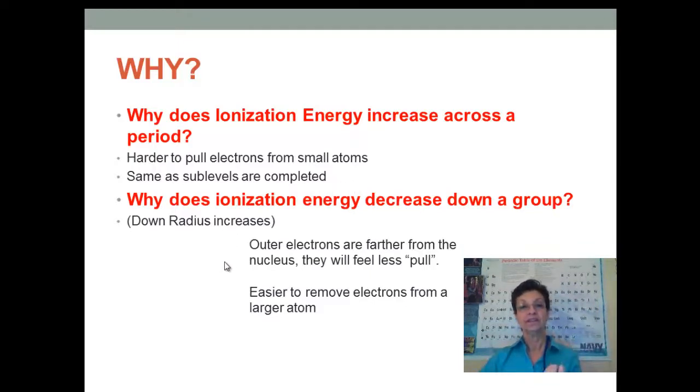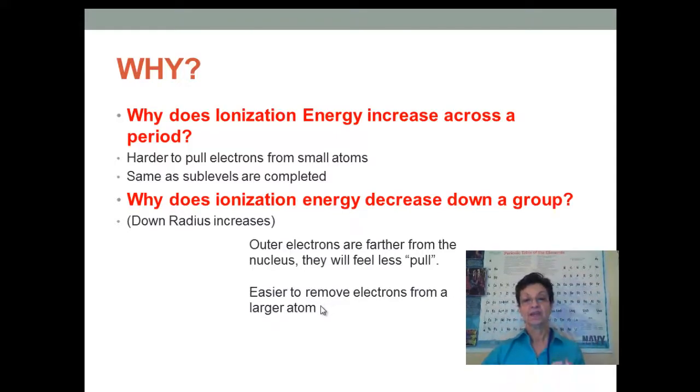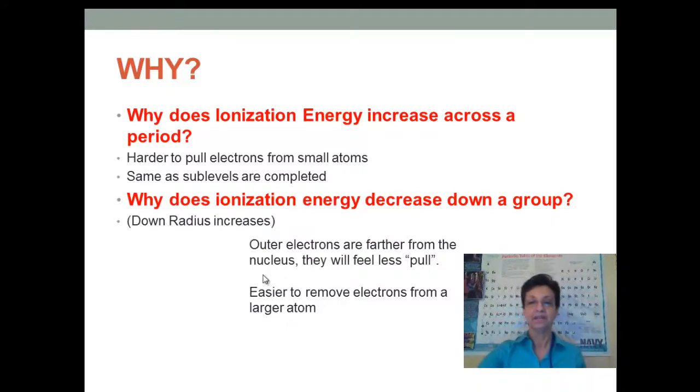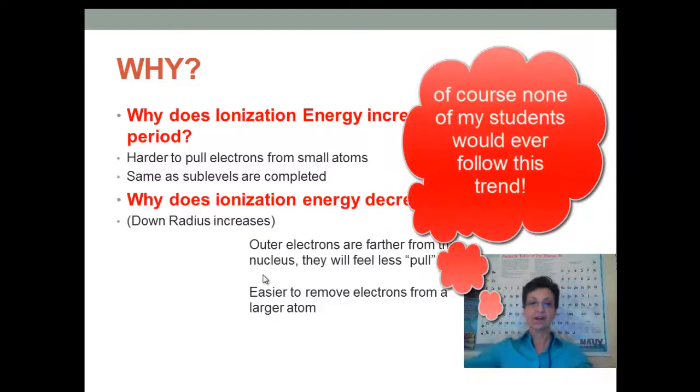As we go down, the ionization energy decreases because the electrons are farther and farther away from the nucleus, and therefore there's less pull from the positive protons in the nucleus. It's easier to remove electrons from a very large atom. Remember the analogy that I gave you, mom being the nucleus, and if kids are close to mom, mom has a lot more control of them. But as the kids spread farther and farther away, go off to college, yada yada, they get kind of crazy out here. So, it's easier to remove those electrons out here. It's easier for the kids to go crazy.